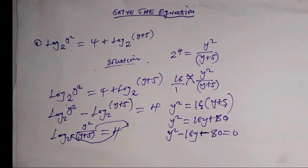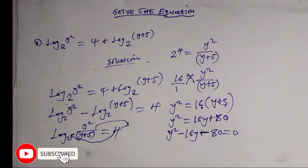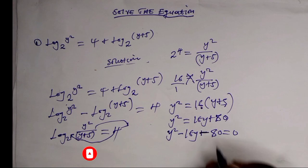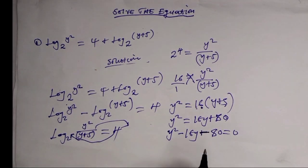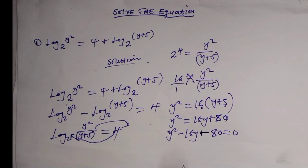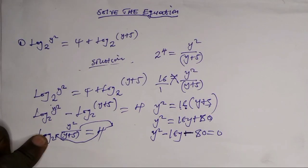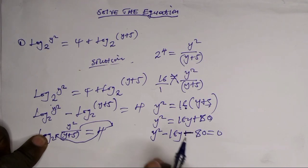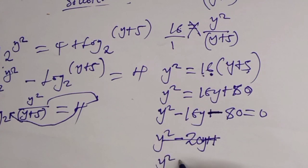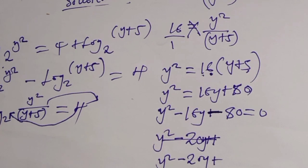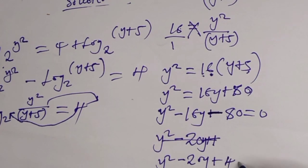So this is the quadratic equation. We are going to look for two numbers which when you multiply give us negative 80 and when you add or subtract give us 16. The numbers are 20 and 4. It will be y squared minus 20y plus 4y.